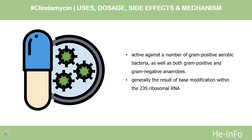Clindamycin is active against a number of gram-positive aerobic bacteria, as well as both gram-positive and gram-negative anaerobes. Resistance to clindamycin may develop, and is generally the result of base modification within the 23S ribosomal RNA. Cross-resistance between clindamycin and lincomycin is complete, and may also occur between clindamycin and macrolide antibiotics, such as erythromycin, due to similarities in their binding sites. As antimicrobial susceptibility patterns are geographically distinct, local antibiograms should be consulted to ensure adequate coverage of relevant pathogens prior to use.